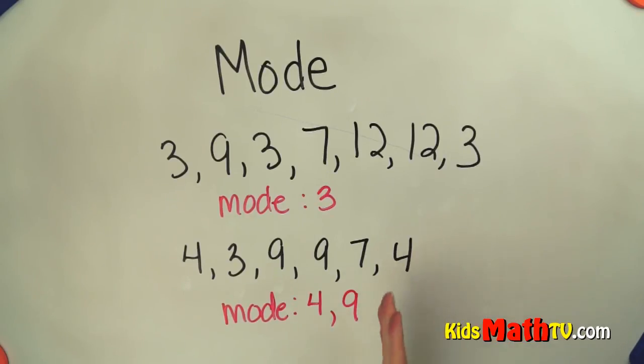So mode is simply the number that occurs the most often in a set of numbers. And that's the end of our lesson on Mode.